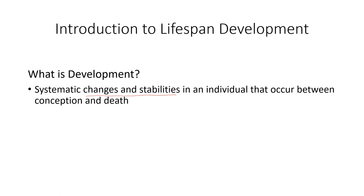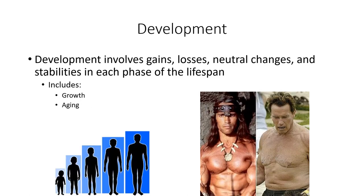The other key component is that development occurs between conception and death. That's the big thing: development starts at the moment of conception and goes all the way to death. It's not something that occurs only until adolescence or adulthood — it begins at conception and goes throughout the entire lifespan. So development involves gains, losses, and neutral changes, as well as stabilities in each phase of the lifespan.